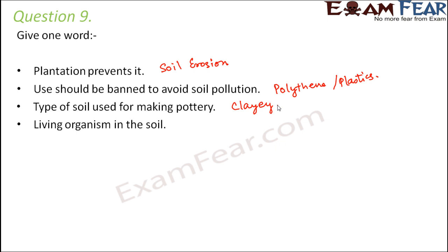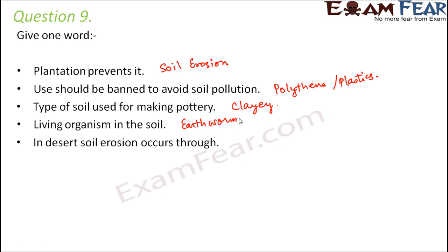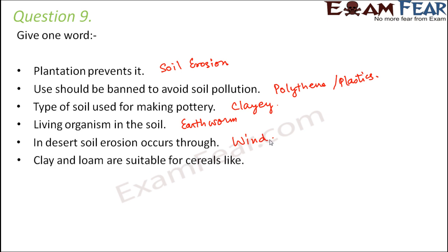Living organism in the soil — a lot of organisms live in the soil, and one common example is earthworm. In desert, soil erosion occurs through — in the desert we do not have water, so water cannot cause soil erosion, but wind can. So wind is the reason for soil erosion in deserts.